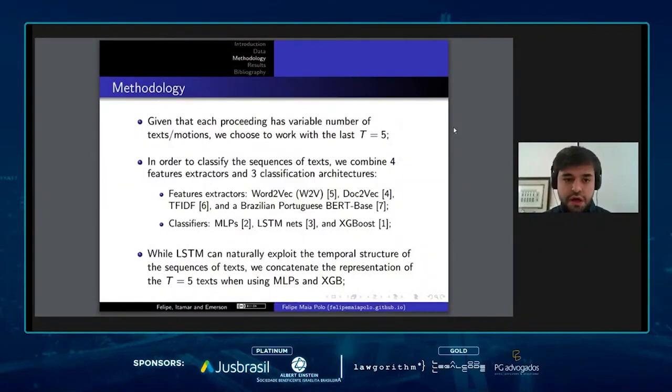Let's talk about our classification strategies now. Given that each proceeding has a variable number of texts, we chose to work with the last five texts. In order to classify the sequence of texts, we combined four feature structures with three classification architectures.